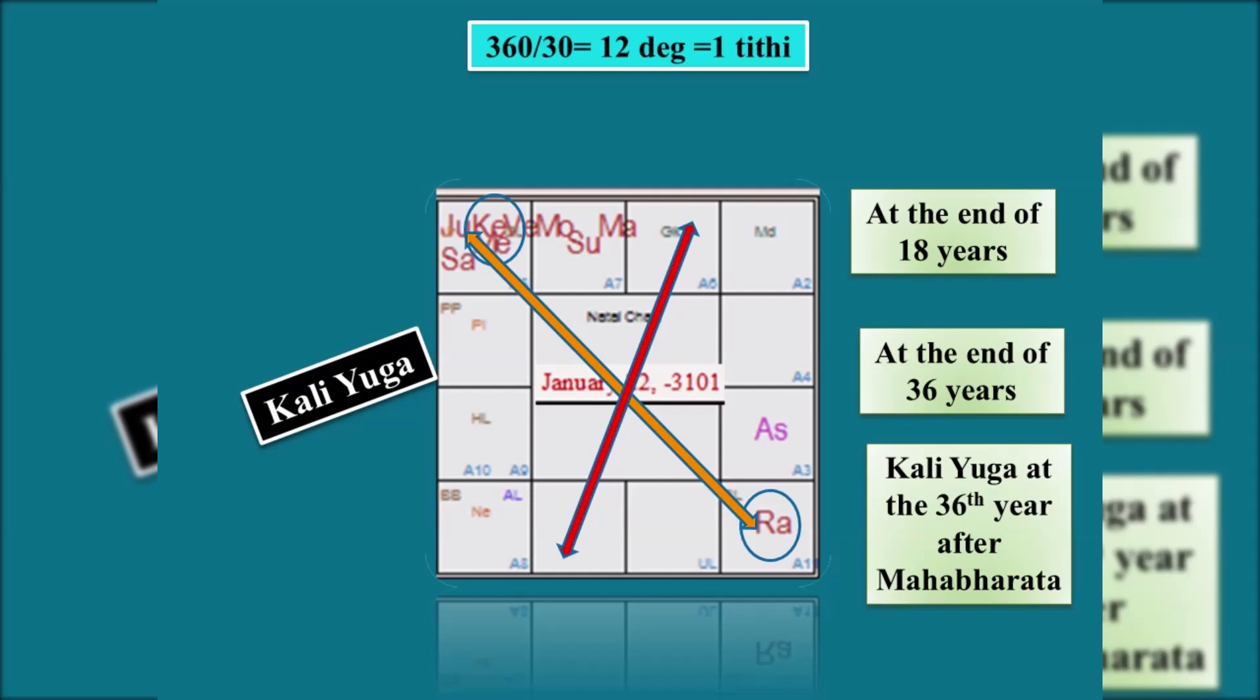Not to the Savana day or to the Nakshatra day. A tithi means it is a duration of 12 degrees covered by the moon in its orbit of 360 degrees. And it has 30 phases, 30 tithis. That is 360 divided by 30 gives 12 degrees. That is a duration of one tithi. Of which 15 tithis are in the waxing phase and 15 on the waning phase.